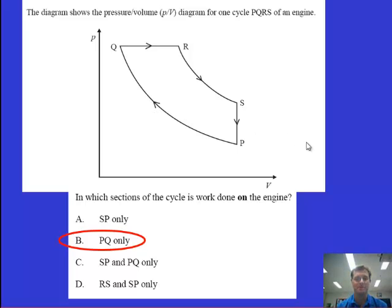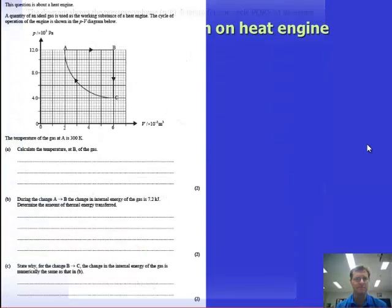Think about another set of questions here. I've got a quantity of an ideal gas used as working substance of a heat engine. The cycle of operation of the engine is shown in this PV diagram, so we've got going around A to B, B to C, C back to A again. The gas at A is 300 Kelvin. Calculate the temperature at B of the gas, that's the first question for you to do.